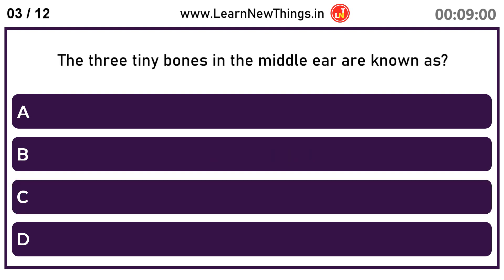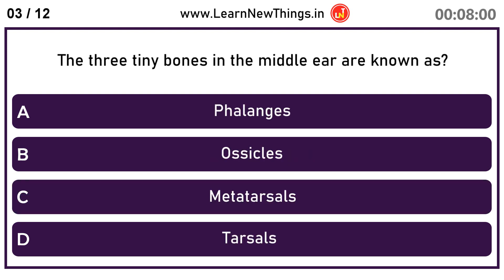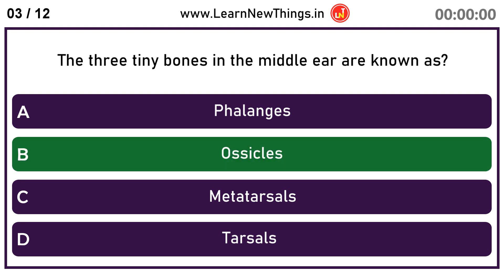The three tiny bones in the middle ear are known as ossicles.